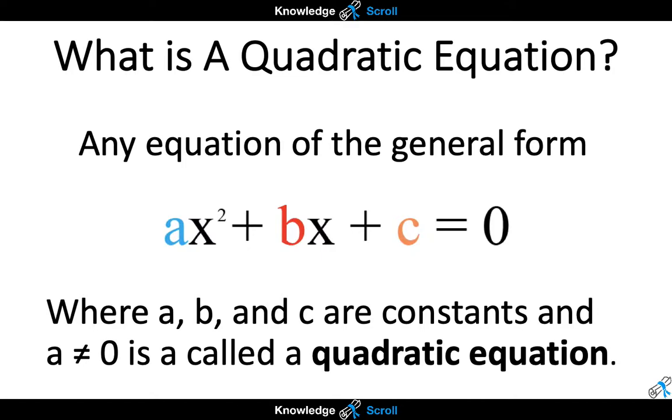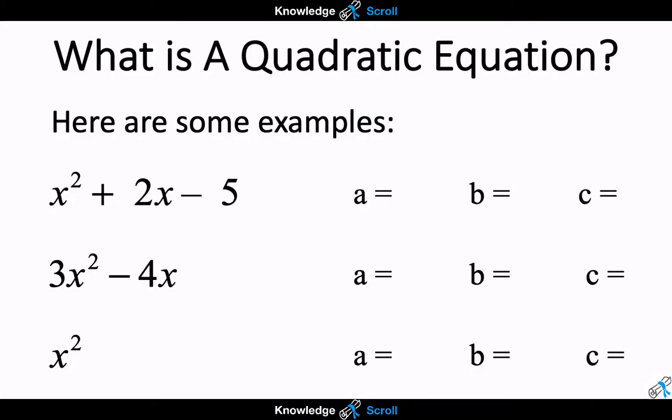Let us look at some examples of the quadratic equations and see if we can identify the values of a, b and c. The first one is x squared plus 2x take away 5. a in this case is equal to 1 even though it is not written it is implied, b is equal to 2. And for the last one you have to be very careful with this because c is equal to negative 5 as the sign and the number go together.